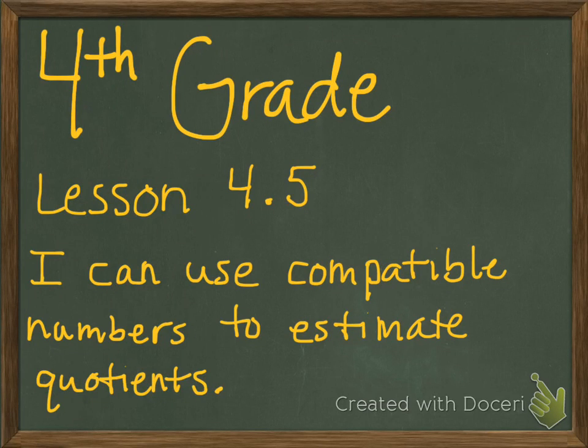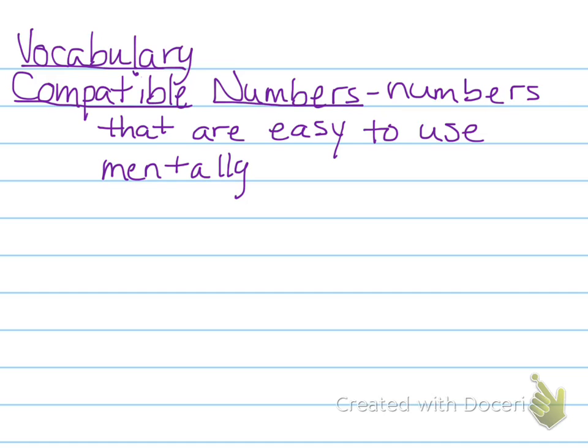All right, fourth graders, we are in lesson 4.5. The objective is I can use compatible numbers to estimate quotients. Kind of a flashback to compatible numbers. Let's remind ourselves what compatible numbers are. Please write this down. Compatible numbers, numbers that are easy to use mentally.